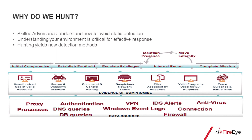So this brings us to the reasons why we hunt. Our adversaries understand how to avoid detection better than most companies know how to actually implement that detection. Not to mention, hunting helps you understand your environment, and that's critical for an effective response plan, and hunting will also yield new detection methods. At the bottom of this slide, you can see the Mandiant kill chain, which illustrates the different phases of the attack, and this is where FireEye's threat analytics platform really shines.